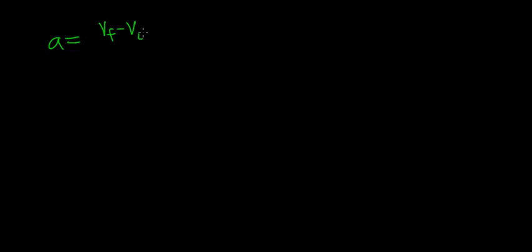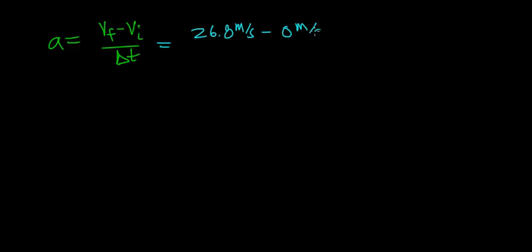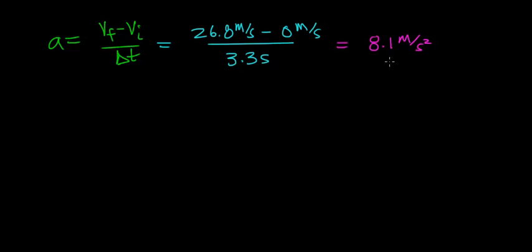The first thing we're going to do is find the acceleration of the car using the change in velocity divided by the time it takes to change the car's velocity. The final velocity was 26.8 meters per second minus the initial velocity of 0 meters per second, divided by 3.3 seconds. That gives us an acceleration of 8.1 meters per second squared. So every single second, the velocity of this car increases by 8.1 meters per second.